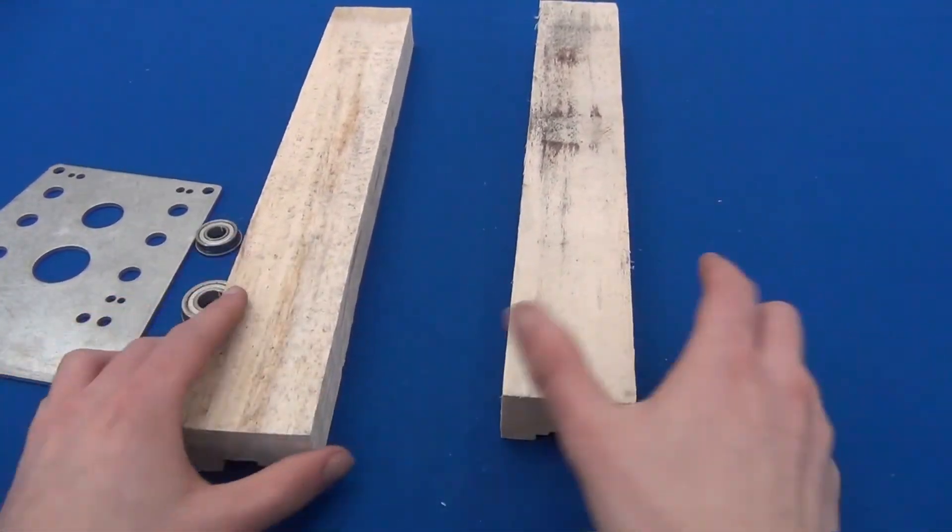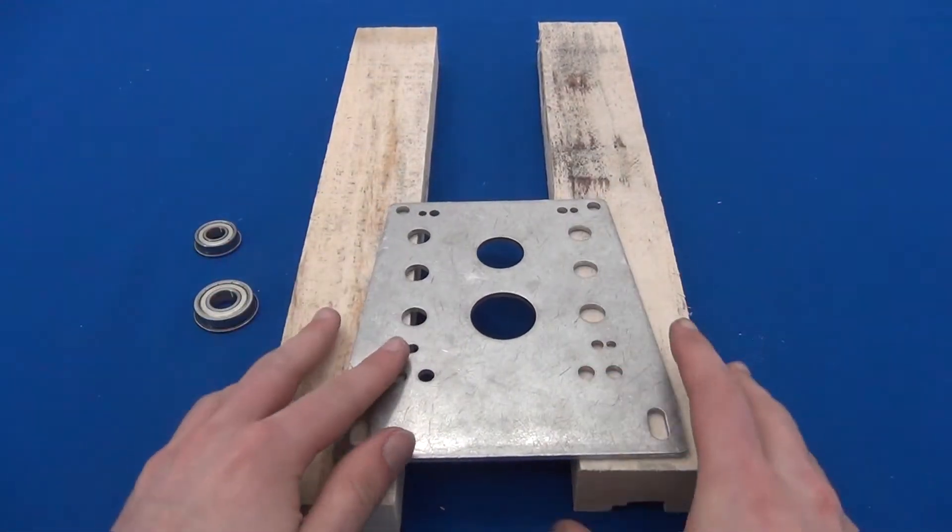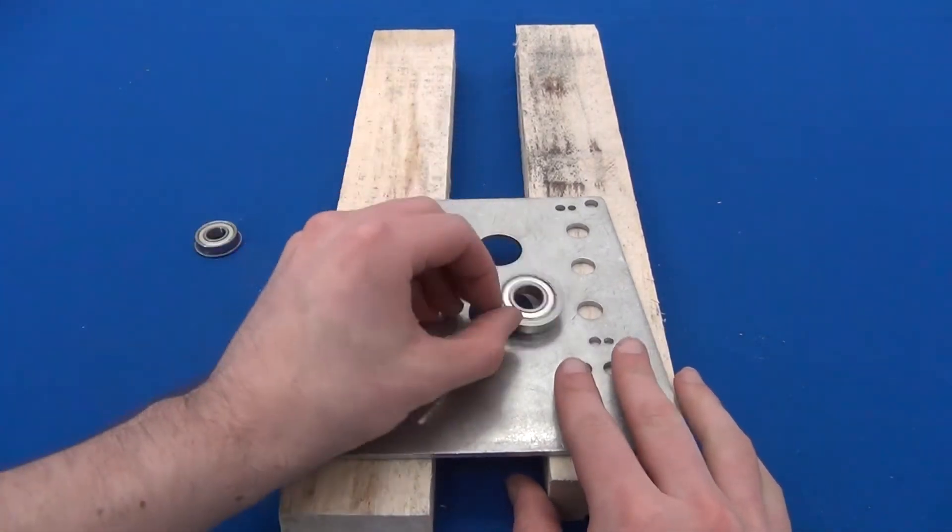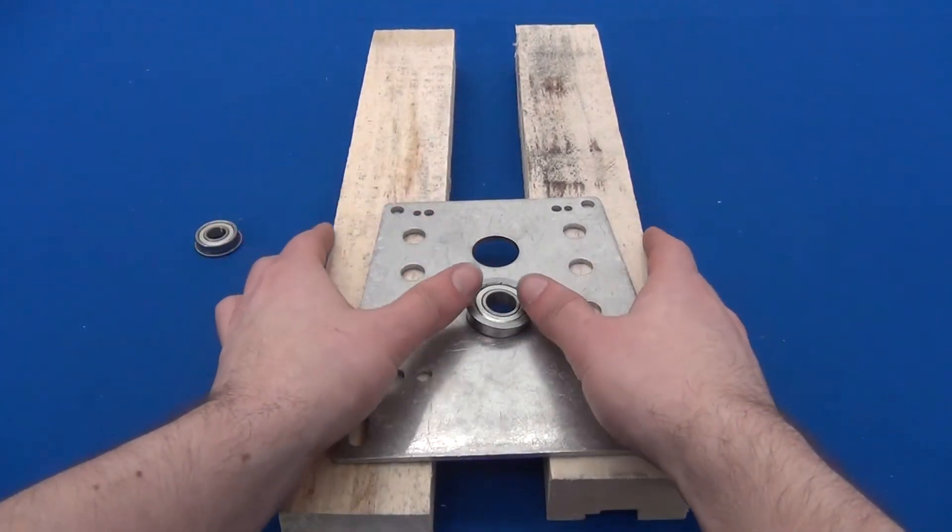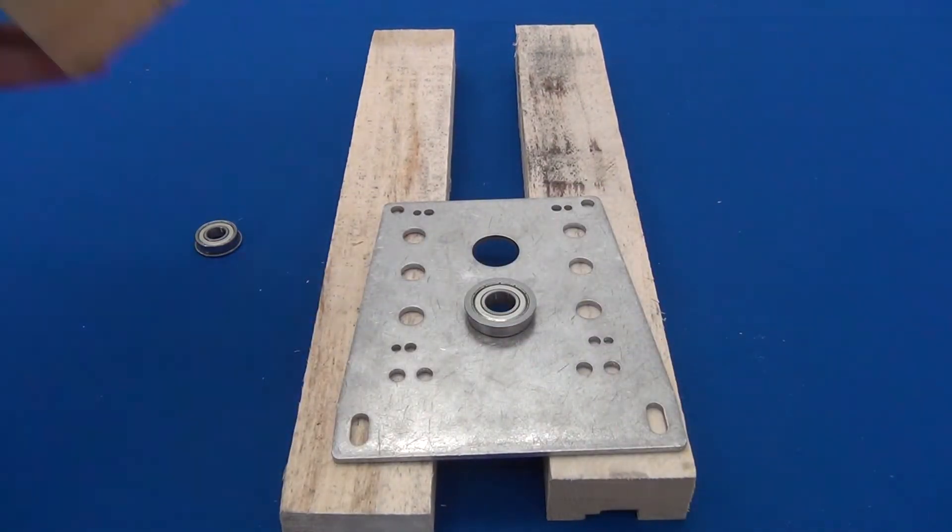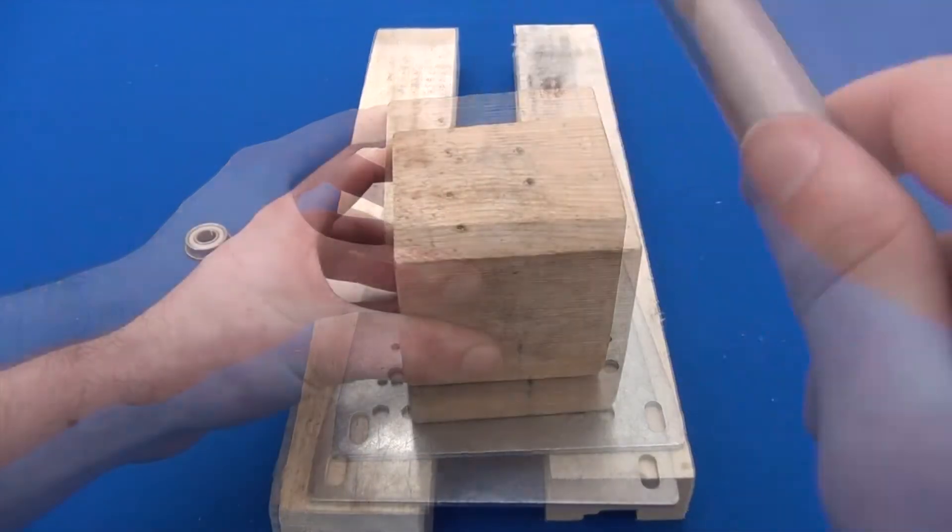It's easiest to do so with an arbor press, but many of you don't have one, so this method will work instead. Get two items to raise up the shaft plate. Make sure you space out the wood blocks or whatever you have so the bearings can go through. If the bearings cannot be inserted with your hands, use a block of wood and a hammer to evenly insert the bearings.